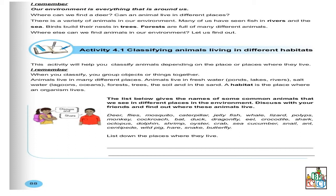Let us continue. The list below gives the names of some common animals that we see in different places in the environment. Discuss with your friends and find out where these animals live. On nous donne une liste en nous demandant de classifier ces animaux-là, c'est-à-dire de dire où est-ce que ces animaux vivent. Allons lire la liste: deer, flies, mosquito, caterpillar, jellyfish, whale, lizard, polyps, monkey, cockroach, bat, duck, dragonfly, eel, crocodile, shark, octopus, dolphin, shrimp, oyster, crab, sea cucumber, snail, ant, centipede, white pig, hare, snake and butterfly.